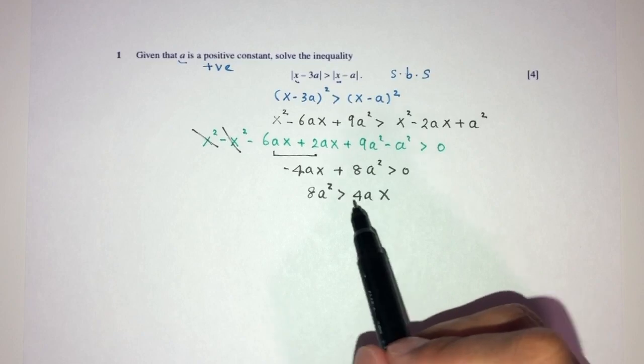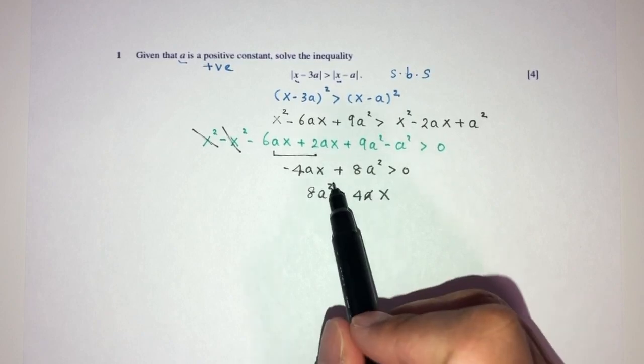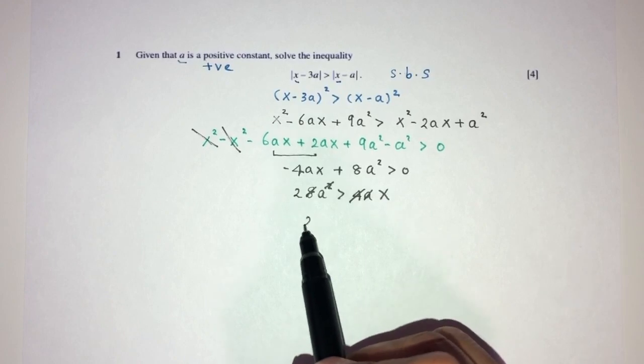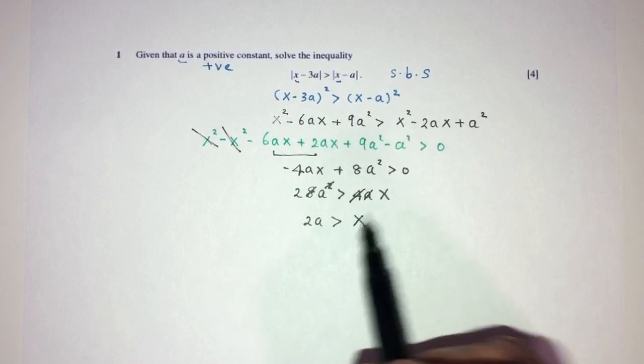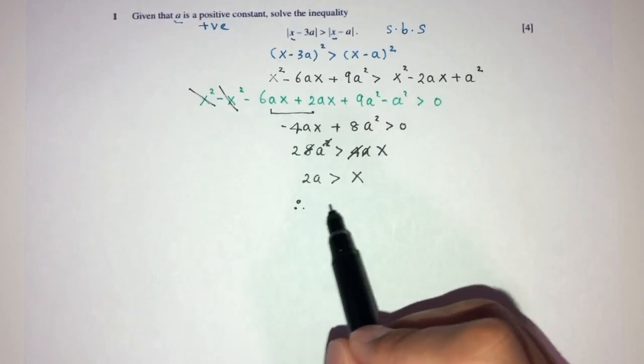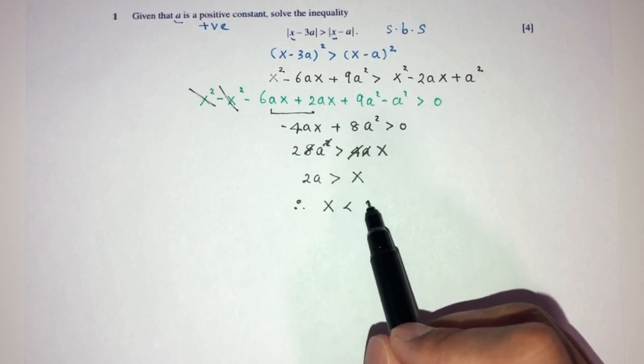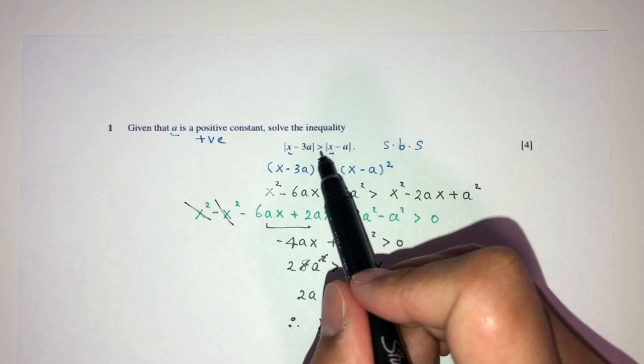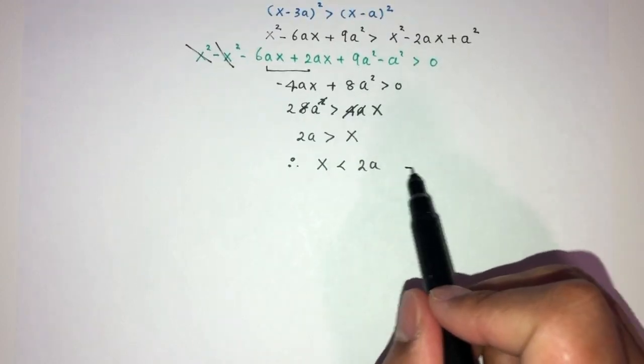Now to find X, we have to divide by A on both sides, this will go away. Divide by 4, you will have 2, so you have 2A is more than X, so you can write this as X will be less than 2A. Here we don't have to have equal signs because you can see here we don't have equal signs.